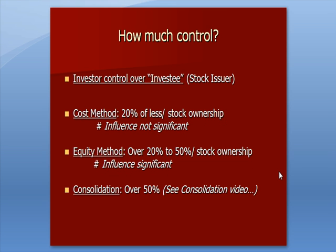We've talked about investment in common stock as an asset. But the accounting for that investment depends upon how much control the investor has over the investee — that is the stock issuer, the company that you're buying the stock from. They issued stock, and now an investor is buying it. It breaks out into three bullet points below.